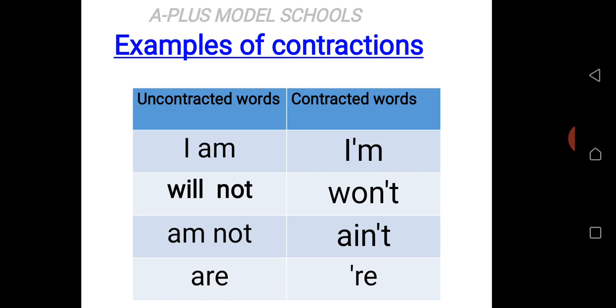Another one is 'are'. The contracted word is also pronounced 're'. But we have the omission of A-R-E with the addition of an apostrophe.